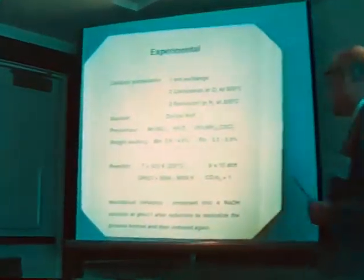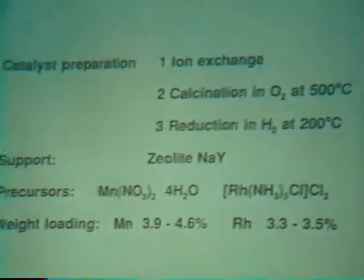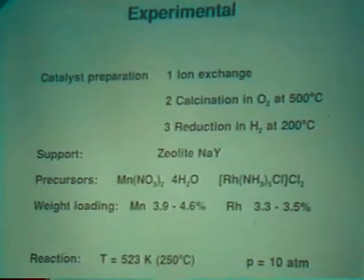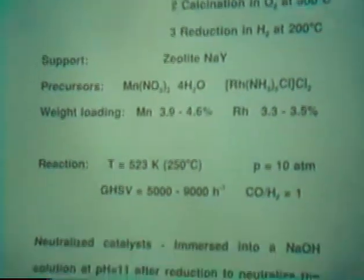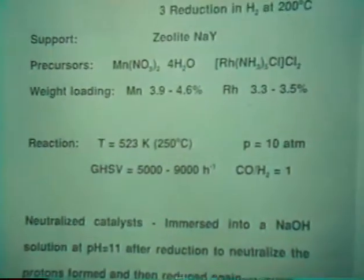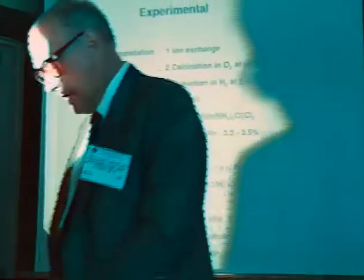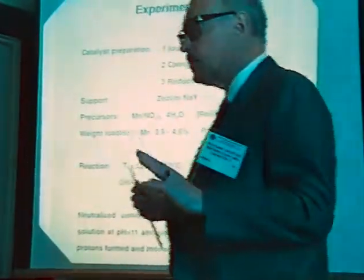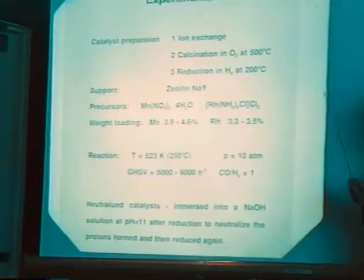I should say a bit about the experimental, because that turns out to be important. We used ion exchange. In all results I want to discuss today, we started with the manganese, which was first ion-exchanged, then the catalyst was heated to remove all the water, and the manganese was distributed over the cages. In the second instance, the rhodium was ion-exchanged, a calcination step followed, and finally a reduction step with hydrogen. In all the reduced catalysts I am going to discuss, the rhodium is zero-valent and the manganese is divalent Mn2+.